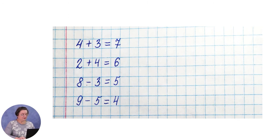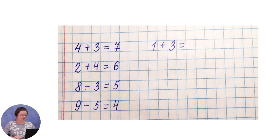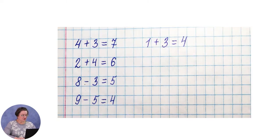От верхнего примера отступаем вправо 3 клетки, строим второй столбик. Записываем первый пример: 1 плюс 3. Определяем арифметическое действие — верно, сложение. Вспоминаем состав числа: 1 и 3 — это состав числа 4. Значит, 1 плюс 3 равно 4.